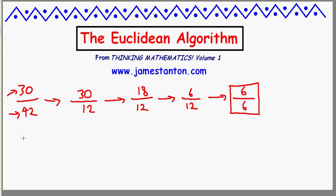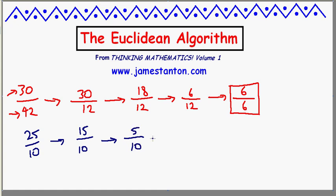Just to practice the technique one more time, let's try to work out the greatest common factor of 25 and 10 — let's pretend we couldn't see it was 5. Keep the smaller and adjust the larger number by subtracting the smaller from it. Again, keep the smaller and adjust the larger number by subtracting the smaller from it. Do it one more time, because now we have two values that are the same, and that is indeed the greatest common factor of the two original numbers. 5 is the greatest common factor of 25 and 10.